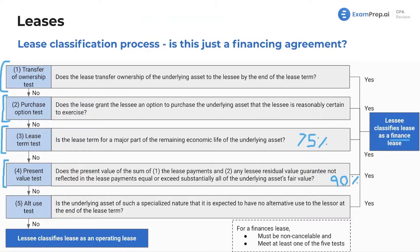The fifth criterion is the underlying asset's specialized nature — whether it will have no alternate use at the end of the lease. For example, if a company builds you a machine that only makes shoes for people with two left feet in a very specific color with a specific logo — so oddly specific that no one else could ever use it — then it's considered a finance lease. If all five criteria are no, then it's an operating lease — your true lease.